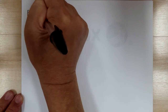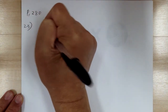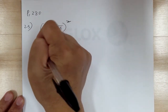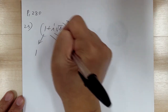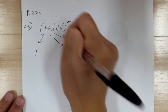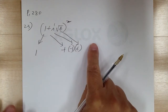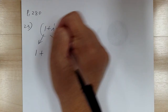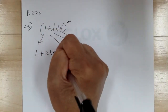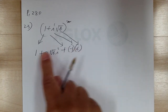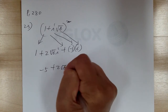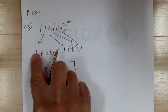Number 23: (1 plus i times square root of 6) squared. Square each term: 1 squared is 1; i squared is negative 1; square root of 6 squared is 6. For the middle term, multiply together: sign is plus, 2 times 1 is 2, and you have the square root of 6i. Then negative 6 plus 1 gives negative 5. Combine to get the answer.